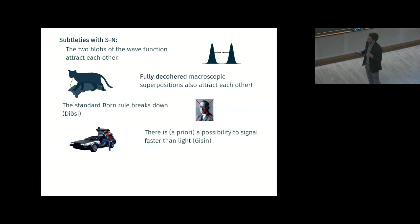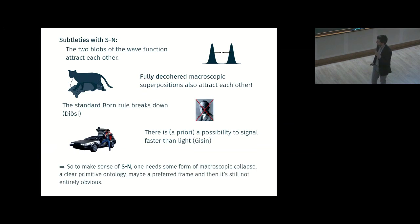You can't see Schrödinger-Newton as a simple modification of the Schrödinger equation while keeping the Copenhagen way of extracting the probabilities of outcomes. And of course, you have a priori a possibility to signal faster than light. This was shown by Ghirardi. I say a priori because you can always imagine that the states you use to signal, you cannot even prepare them in the theory. But that's, you would have to show that. We can say, I think, safely say that a priori you can signal in theory. So making sense of Schrödinger-Newton is not simple. You need some kind, probably, of macroscopic collapse. At least, you have to add a clear primitive ontology, maybe a preferred frame. And still, it's not an entirely obvious physical theory because you don't have the Born rule.